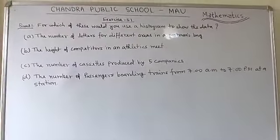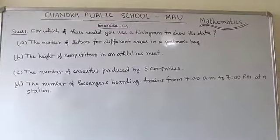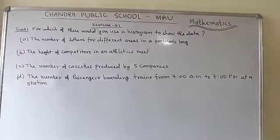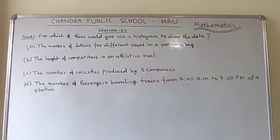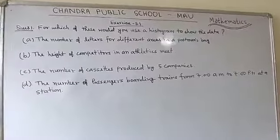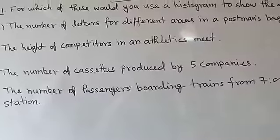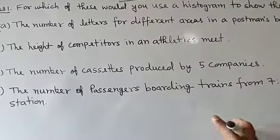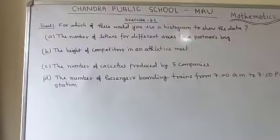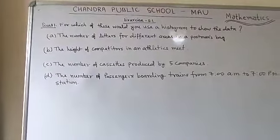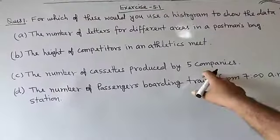Option C is the number of cassettes produced by 5 companies. The data for different companies may vary greatly — for example, one company making 100 cassettes, another making 500, another making 200. So you will not be able to make group data, and therefore you cannot make a histogram for this condition.